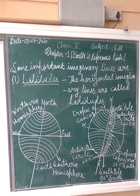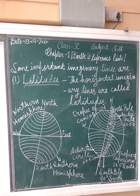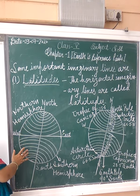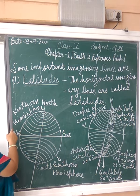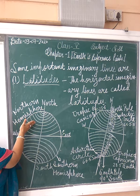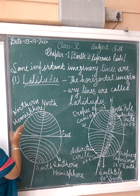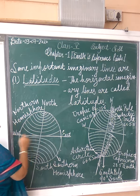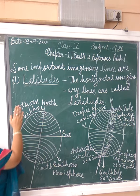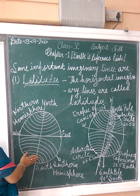Some important imaginary lines are as follows. The horizontal imaginary lines are called latitudes. The equator divides our globe into two parts — northern hemisphere and southern hemisphere. This is the equator.